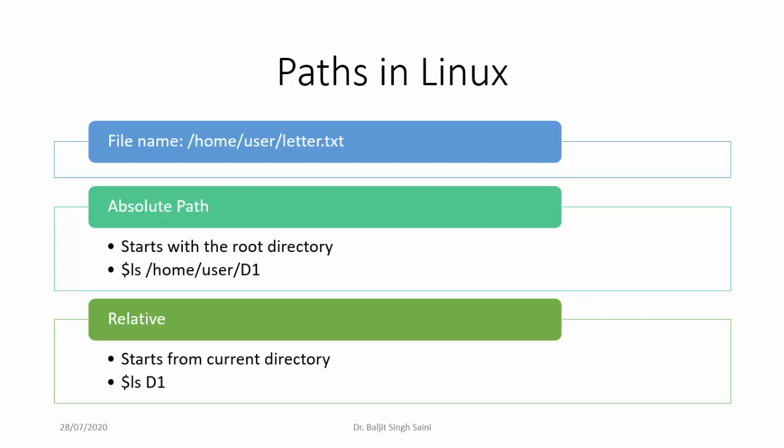Absolute path means you will always start from the root directory — from the very top. For example, ls slash home slash user slash d1 is an absolute path. Even the earlier example, slash home slash user slash letter dot txt, was also a full absolute path. Why? Because it starts from the root — slash means root, inside root there is a directory home, inside home there is directory user, and inside user there is directory d1.